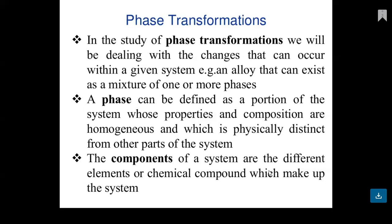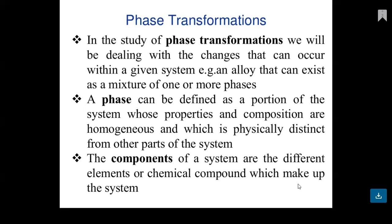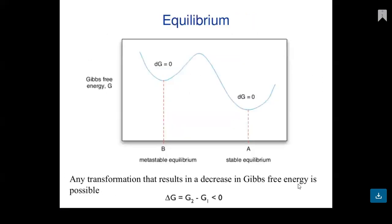If we consider a sandwich as an analogy, the first layer is one phase, the middle layer is another phase, and the bottom layer is the third phase. The components of a system are different elements or chemical compounds that make up the system. Different elements present constitute the phases, and this is called the component of a system.